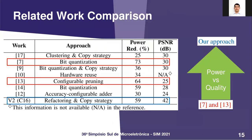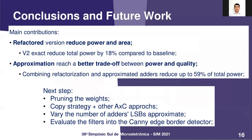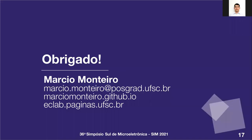Compared to the related work, our approach has a better trade-off between power and quality, while works 7 and 13 are more power efficient but achieve lower image quality. In this work, we refactored the Gaussian filter to reduce power and area, and also applied approximate computing to achieve a better trade-off between power and quality. Some of our next steps are pruning the filter's weights, varying the number of approximate adders, and applying the filters on the Canny edge border detector. Thank you very much for your attention.